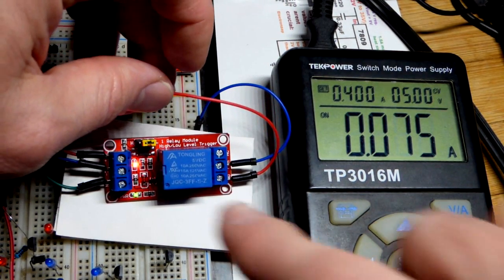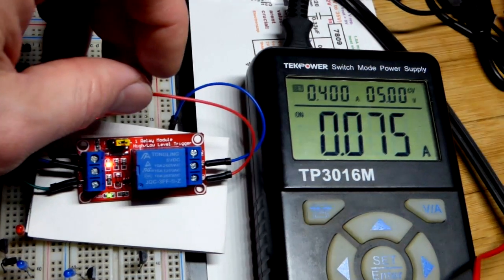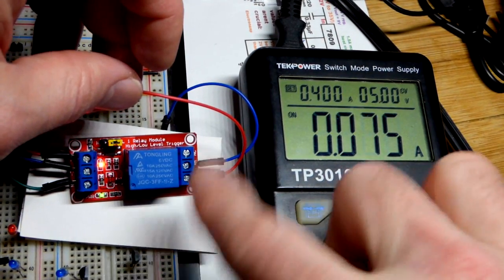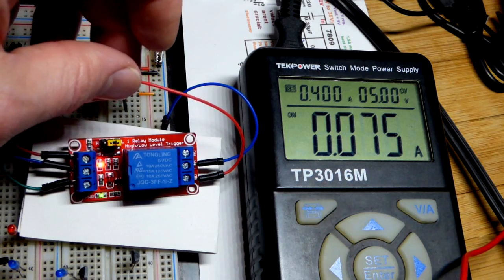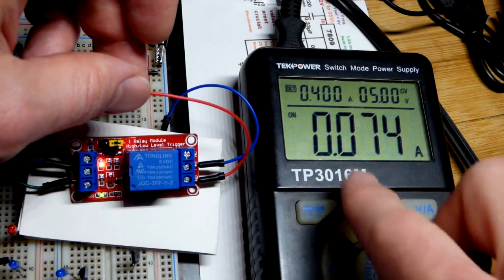So now we're not powering the load. It's switching with no load. And you can see that it's about 75 milliamps of current just to power the relay coil to switch it into the energized position, which would be on in this case for these two pins.